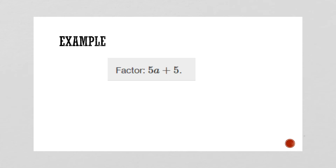Let's factor the GCF out of 5A + 5. They both have a 5 in common, so I'm going to factor out the 5. Do they both have an A in common? No — so my GCF out front will not have an A with it. What times 5 gives me 5A? That's A. What times 5 gives me 5? That's 1 — a lot of people have a tough time with that. 5 times A gives 5A, 5 times 1 gives 5.